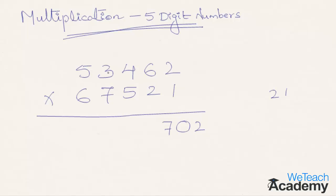Step four: 3 into 1 is 3, plus 7 into 2 is 14; 3 plus 14 is 17, plus 4 into 2 is 8; 17 plus 8 is 25, plus 6 into 5 is 30; 25 plus 30 is 55, plus 2 carried forward gives 57. Write 7, carry 5. Step five, consider all 5 digits: 5 into 1 is 5, plus 6 into 2 is 12; 5 plus 12 is 17, plus 7 into 6 is 42, plus 3 into 2 is 6; 17 plus 42 plus 6 is 65, plus 4 into 5 is 20; 65 plus 20 is 85, plus 5 carried forward gives 90. Write 0, carry 9.